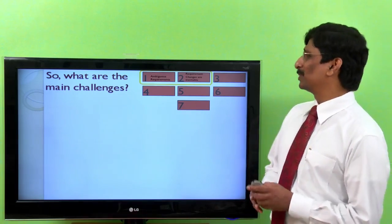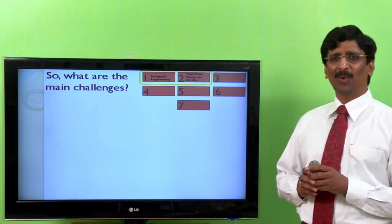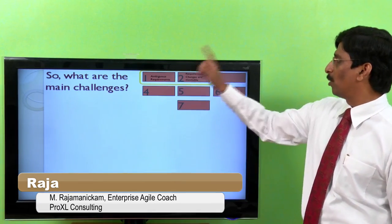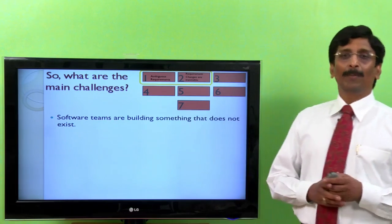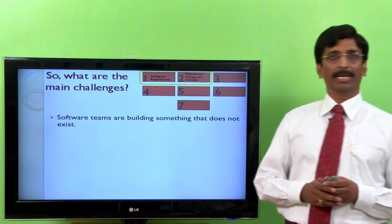So let's discuss what are the key challenges? What are the main issues? Why do we have to have ambiguous requirements? Why do we have to have requirements changes? Software teams are building something that does not exist in the beginning.